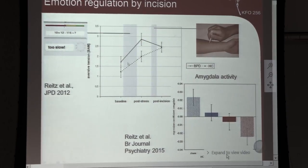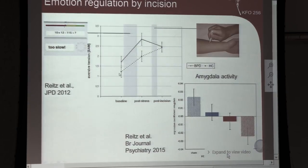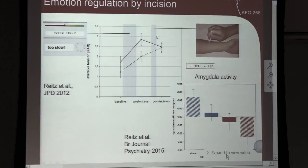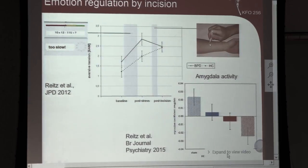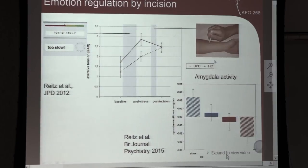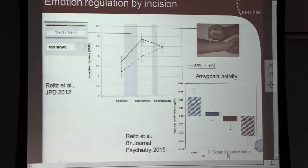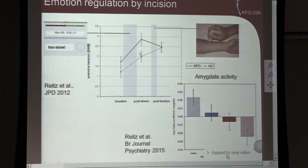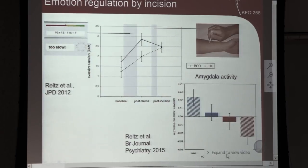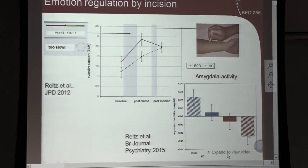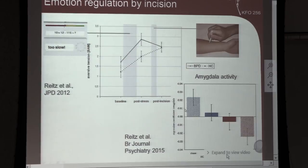On the amygdala level when done in the scanner, we found that incision leads to a decrease of amygdala activity in borderline patients, while it produces an increase of amygdala activity in healthy controls. We then asked: is it the tissue damage or the pain per se? We compared an incision with a scalpel to a blade stimulus that is equally painful but does not penetrate the skin. Contrary to our expectations, there was no difference — both pain stimuli led to a decrease of stress levels in borderline patients independent of skin penetration.